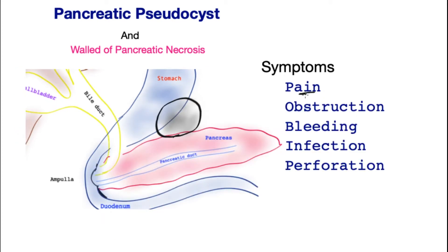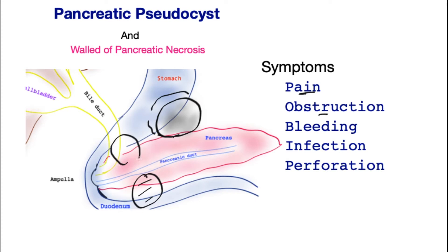Pseudocysts may cause pain in the upper abdomen, or depending on their location, to the left flank or back. This pain can at times be quite severe. They may cause obstruction by growing towards the stomach or the bowel, causing the patient to vomit and not being able to retain their food, thus losing weight. Sometimes they may compress the bile tube and cause jaundice to arise.